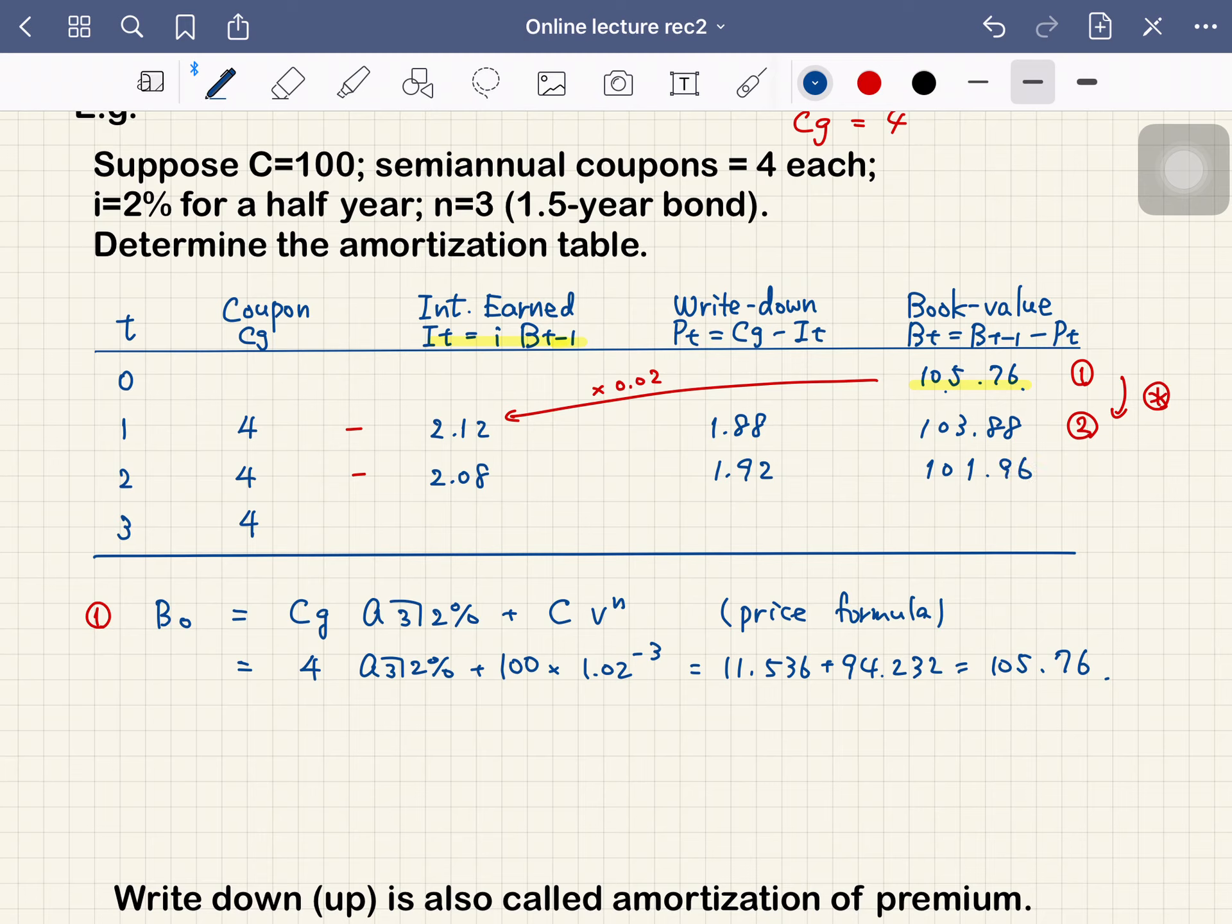Again, we multiply by 2% to get 2.04. The write down is 1.96. We subtract 1.96 from the book value to get 100.00. This is the end of the amortization table.